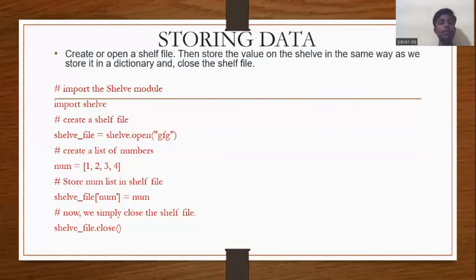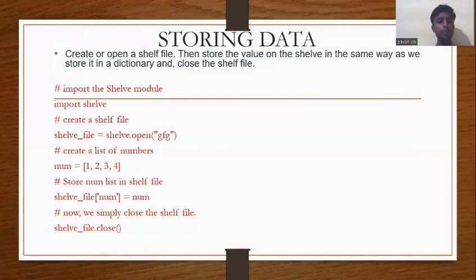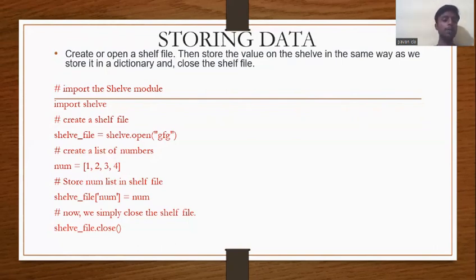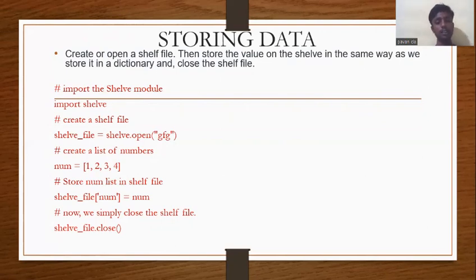Next, storing data in the shelf module. To store data: create or open a shelf file, then store the value on the shelf in the same way as we store it in a dictionary, and close the shelf file. Example: import shelf, then create a shelf file — shelf_file = shelf.open('gfg'). Create a list of numbers: num = [1, 2, 3, 4]. Then store the numbers list in the shelf file: shelf_file['num'] = numbers. Finally, close the shelf file: shelf_file.close().